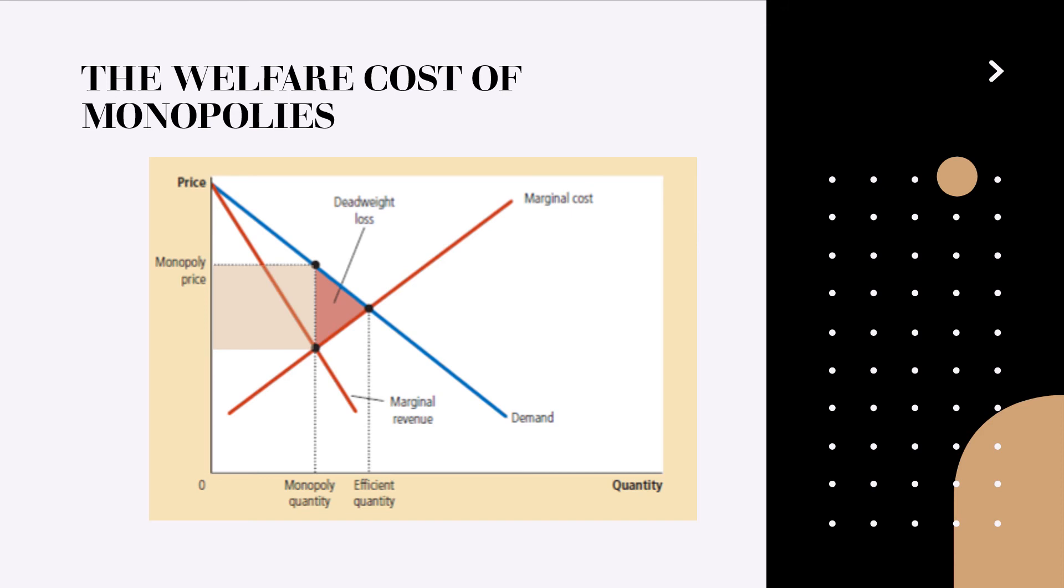So all in all the social welfare is reduced. The total surplus is reduced. And thus we observe the negative effects of monopolies to social welfare.